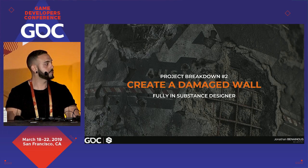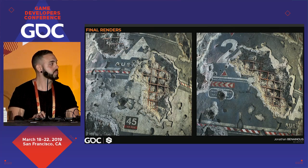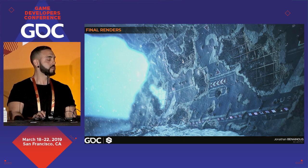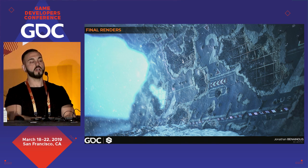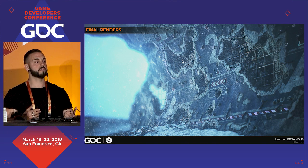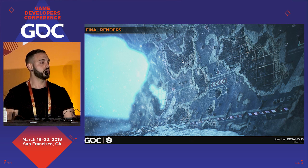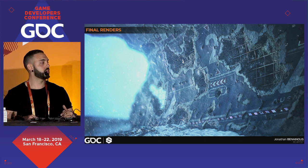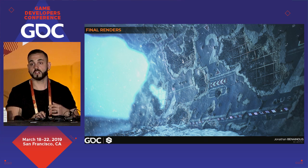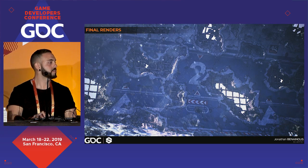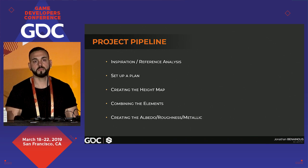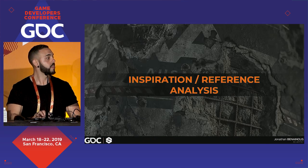Project breakdown number two: creating a damaged wall fully in Substance Designer. Here are a few renders on the sphere and in the environment. When I start working on a material, I always have in mind an environment I want to create out of it. The plan was to create a damaged wall for a sort of destroyed tunnel from a hidden sci-fi base. I also wanted to study in-depth the layering of detailed materials and find nice techniques to connect them seamlessly.